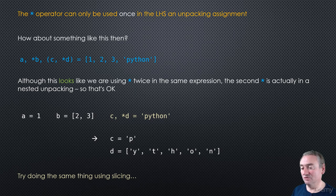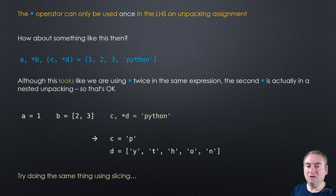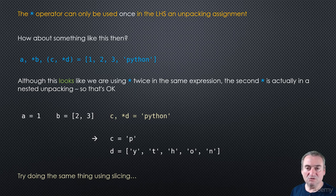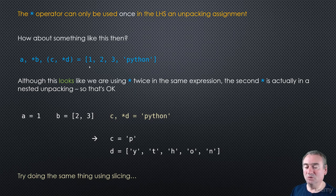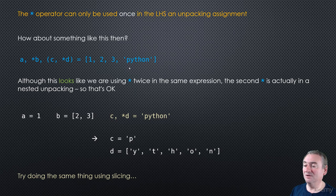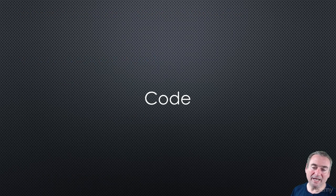We saw earlier how slicing could do some of what the star operator does, though the star operator also applies to non-indexable iterables. As a challenge, try writing the nested unpacking example using slicing instead — without hard-coding values, and in a way that works for any length iterable. We'll look at the solution in the next video. Thanks for watching!